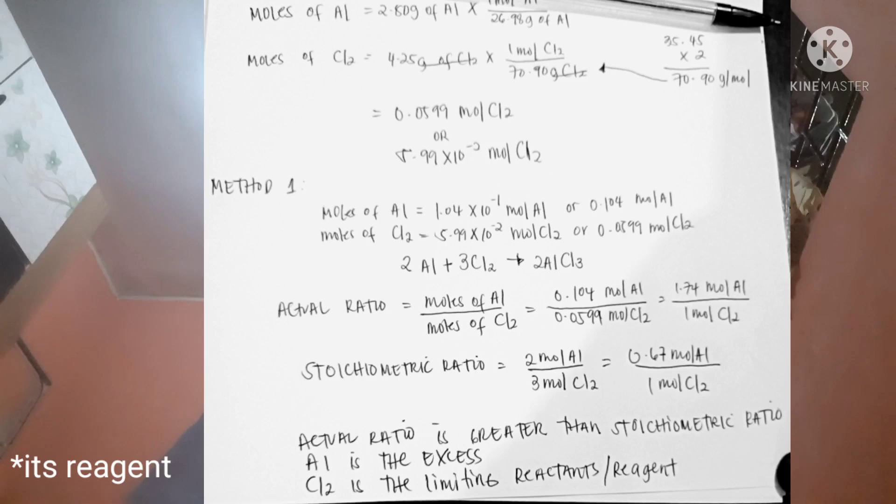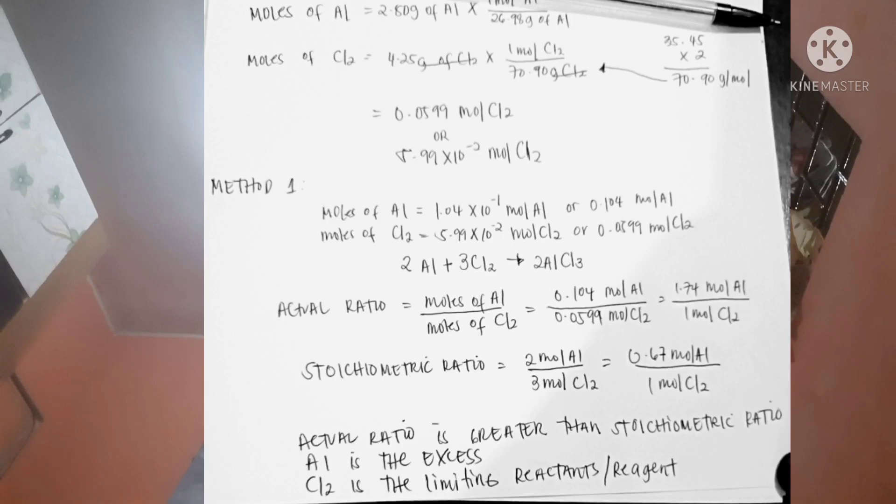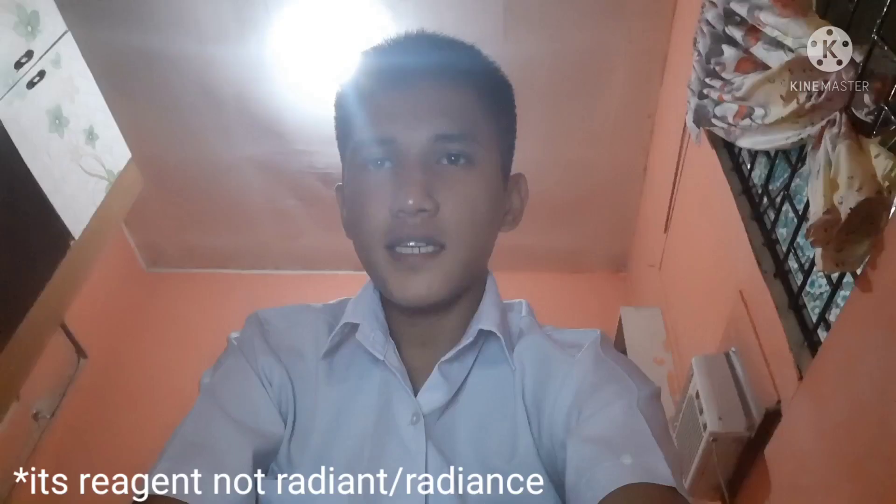So let's compare our answer. We got an actual ratio of 1.74 and stoichiometric ratio we have 0.67 mole of aluminum. So we notice here that our actual ratio is greater than our stoichiometric ratio. What does it mean? It means meron tayong maraming aluminum na pwede mag-react sa bawat mole ng chlorine gas. Therefore, ang excess reagent is aluminum and the limiting reagent naman is chlorine gas.